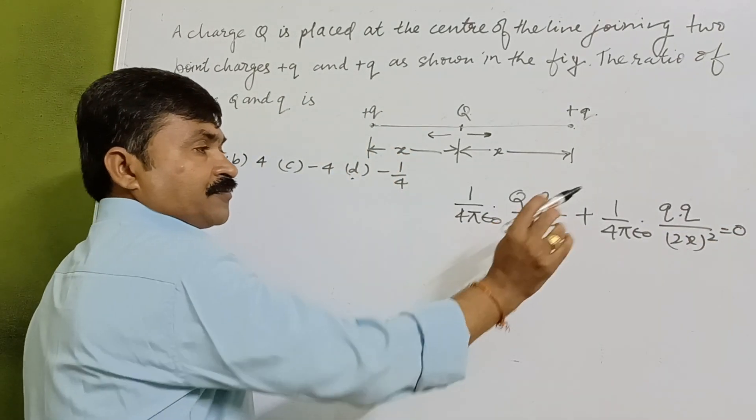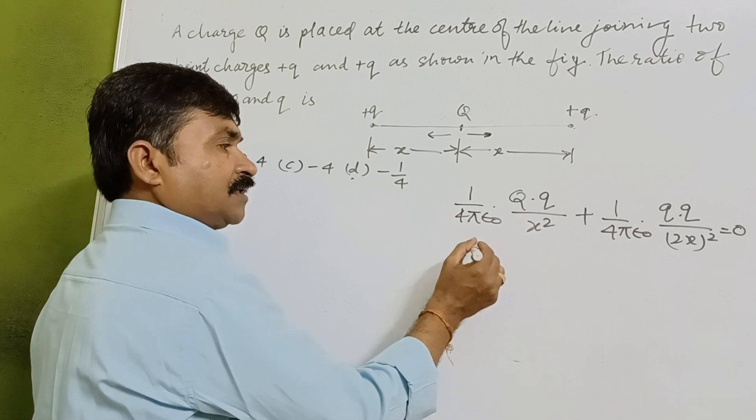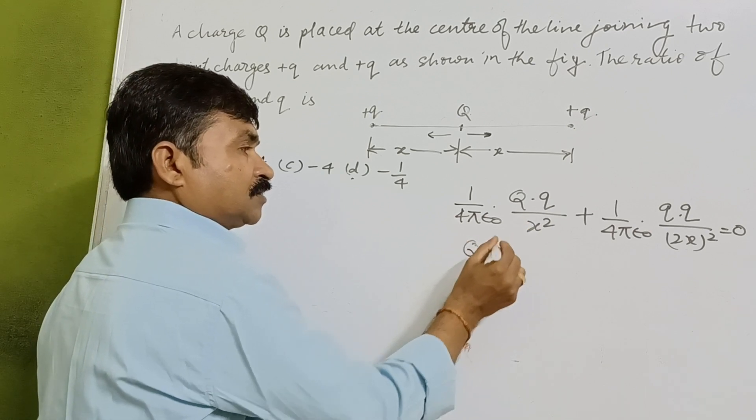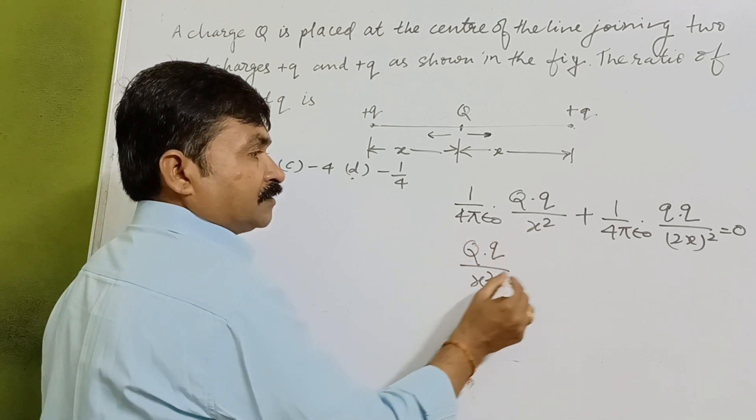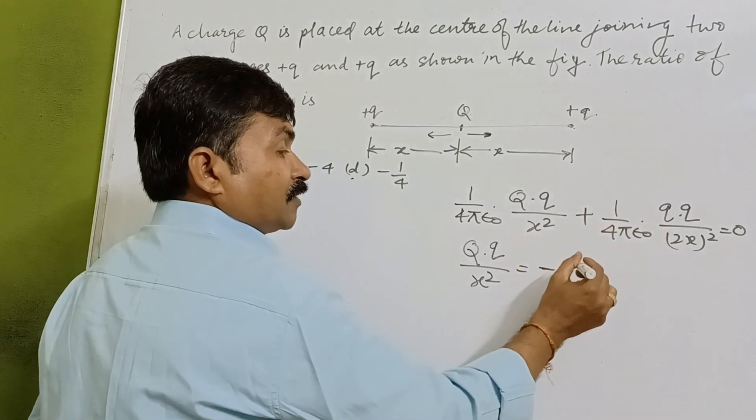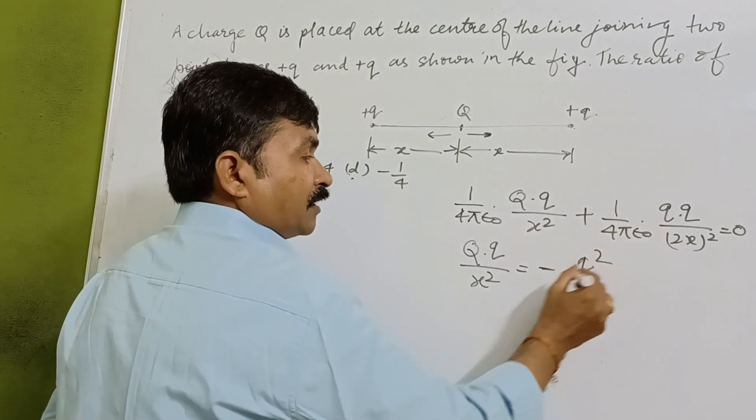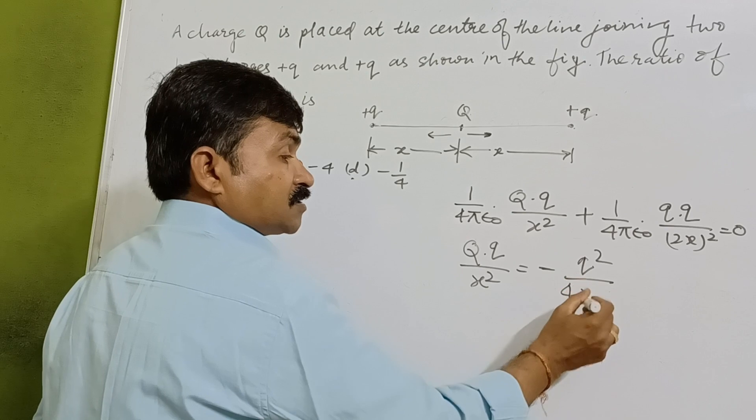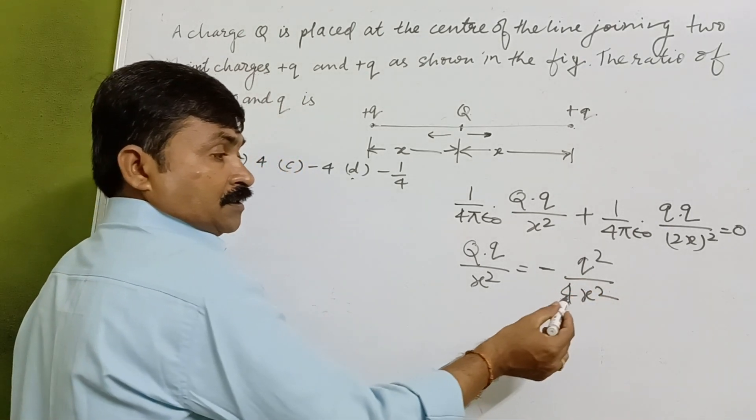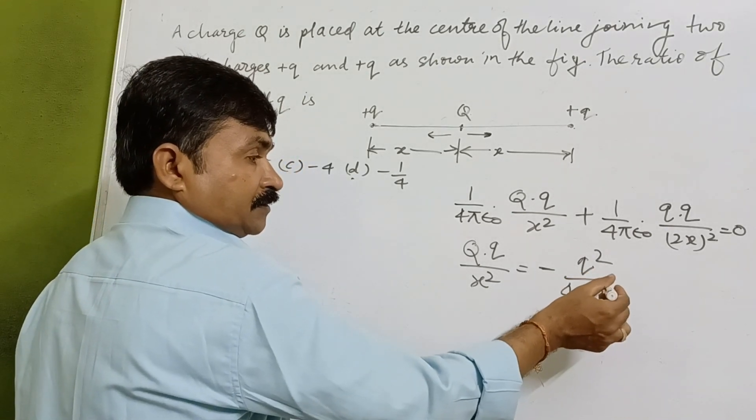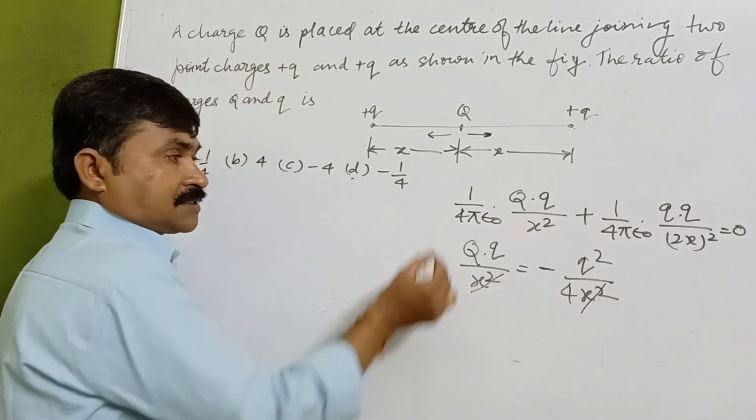So this 1/(4πε₀) cancels. Now we are having Q into Q over x², which we are taking there from it is Q² upon 4x². Now if we go through it, this x² is cancelled.